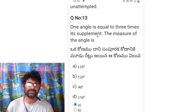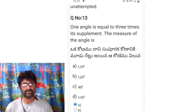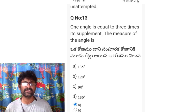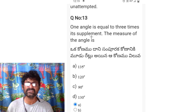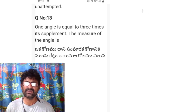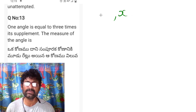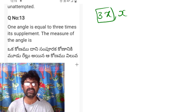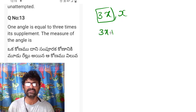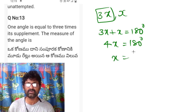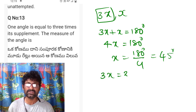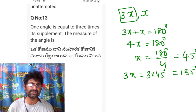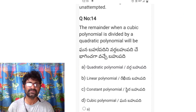Question 13: one angle equals 3 times its supplement. Supplementary angles sum to 180°. If one angle is x and its supplement is 3x, then x + 3x = 180°, so 4x = 180°, giving x = 45°. The required angle is 3x = 3 × 45° = 135°. Option A is correct.